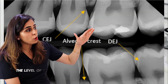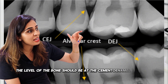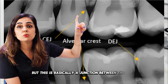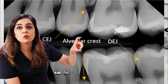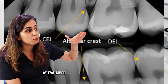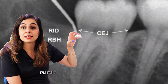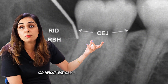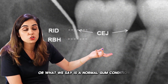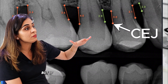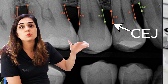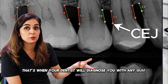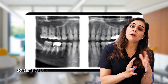The level of the bone should be at the cemento-enamel junction (CEJ), which is basically a junction between the root and the crown of the tooth. If the level of the bone is at this level, that's a healthy bony structure — what we say is a normal gum condition. But if the level is much lower than that, that's when your dentist will diagnose you with a gum problem.